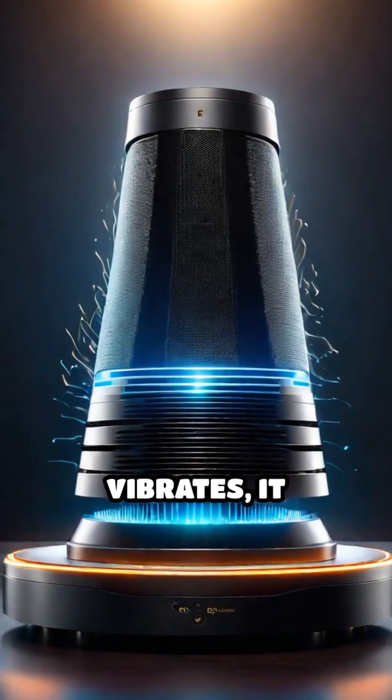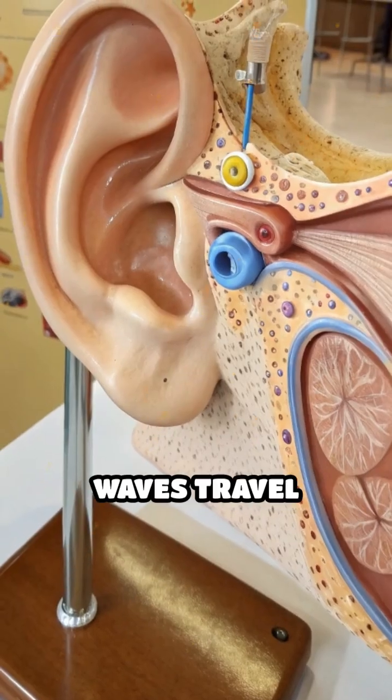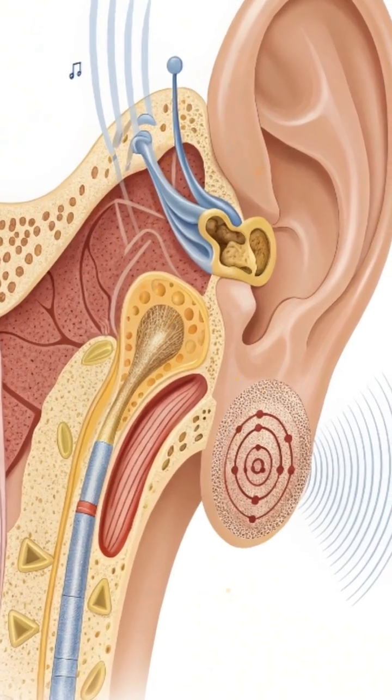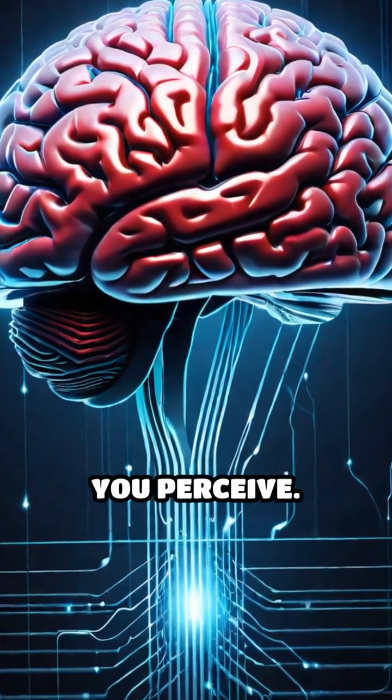When something vibrates, it creates pressure changes in the air, forming sound waves. These invisible waves travel outwards, and when they reach your ears, they cause tiny parts inside to vibrate. Your brain then translates these vibrations into the sounds you perceive.